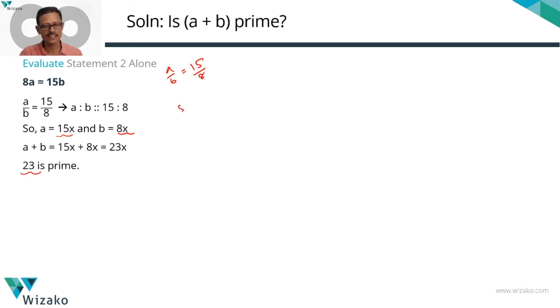In the last case, we had a conclusive answer with 56 not being prime. 23 is prime. If x = 1, then 23x is going to be prime. If x is any integer other than 1, then 23x is not going to be prime. So can a + b be prime? Yes. Is a + b definitely prime? Need not be. We're not able to conclude. If x = 1, it's prime. For other values of x, it's not prime. Both possible cases exist if we know that 8a = 15b.